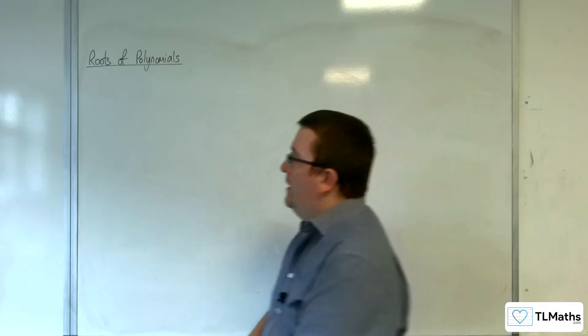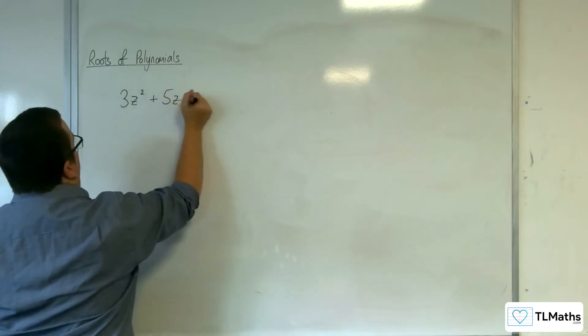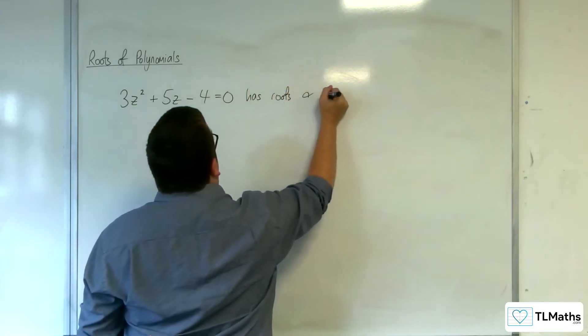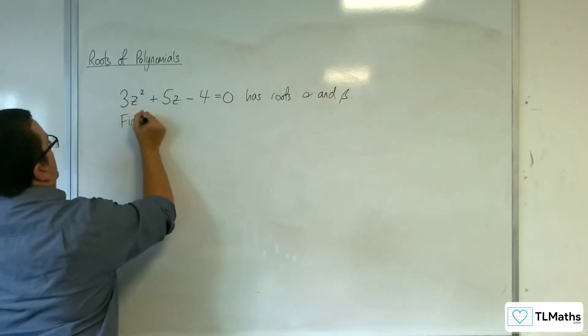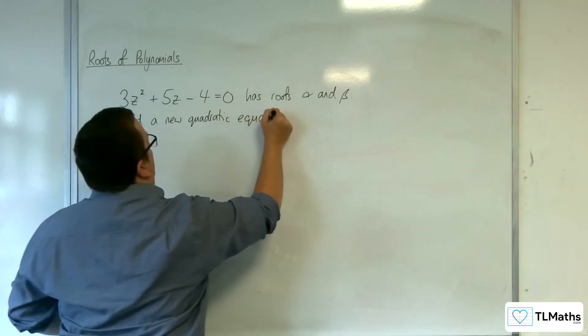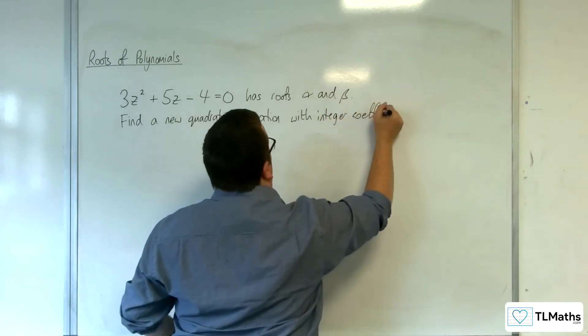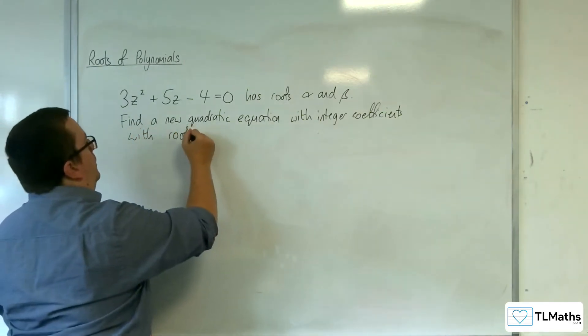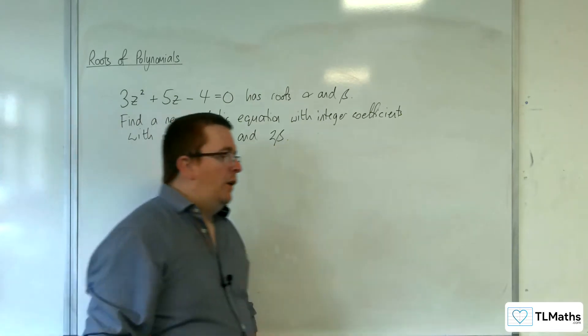Okay, so let's say we had a quadratic equation. Let's say we've got 3z² + 5z - 4 = 0. So let's say our job was to find a new quadratic equation with integer coefficients with roots 2α and 2β. So let's say that was the problem.